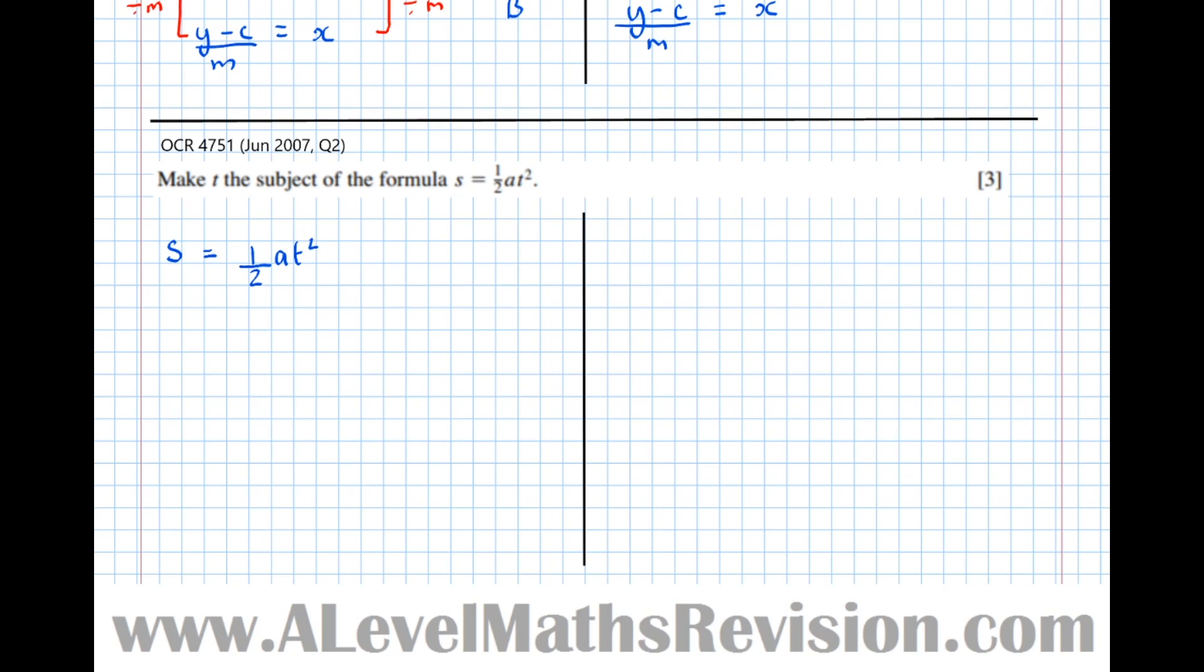S equals a half A T squared. I can see attached to the T squared is a half A. I'm going to think of it in two stages: there's a half attached and there's an A attached. First, to undo the times by a half, I'm going to times both sides by 2. Times the left-hand side by 2, I get 2S equals, and times the right-hand side by 2. Two times a half is just 1, so that cancels. I've got 2S equals AT².